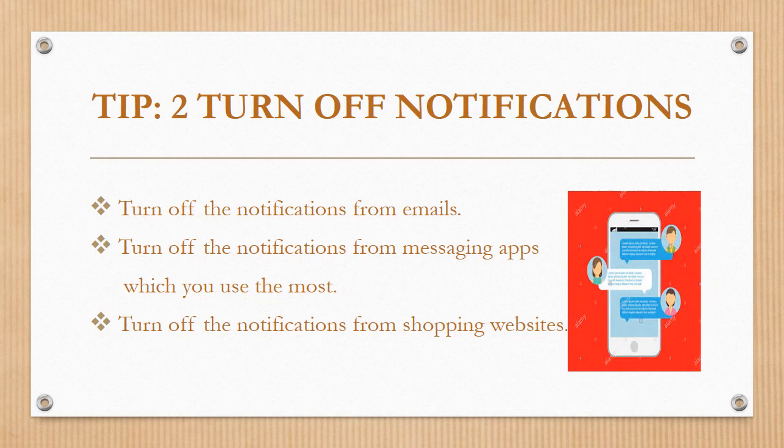Tip number two is to turn off your notifications. Most of the distractions we have on the phone are due to notifications, and you will have experienced this. We keep the phone down on our own, but if there are any notifications, our mind is totally diverted — we think we will just quickly check what happened. The maximum distractions are due to notifications from all your phone settings. If you turn off notifications, your phone usage will be reduced on its own. Whether it is email notifications, messaging apps, shopping websites — turn off notifications from all of them, and you will be able to save a lot of time.